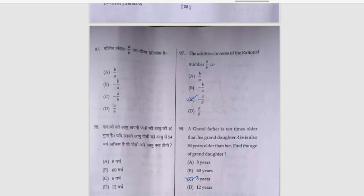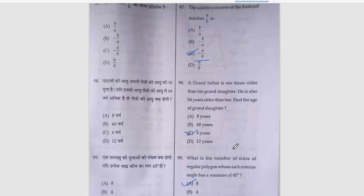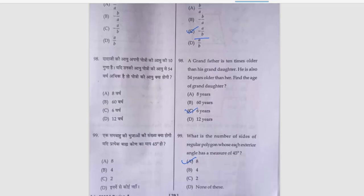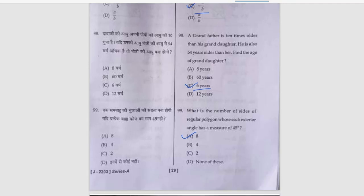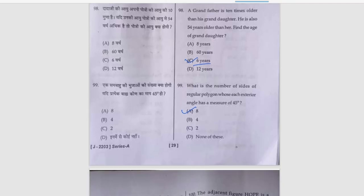Next is additive inverse of rational number A/B, that is minus A/B. In case if you are not clear, I will repeat the question. This is series A. Grandfather is 10 times older than his granddaughter. He is also 54 years older than her. Find the age of granddaughter, that is 6 years. What is the number of sides of regular polygon whose each exterior angle has a measure of 45 degrees? That is 8.